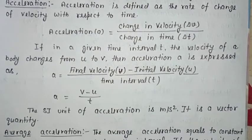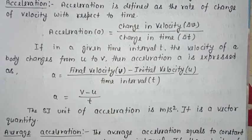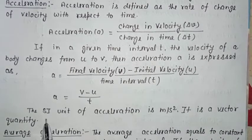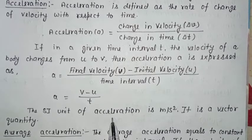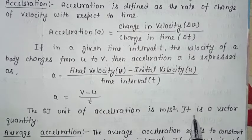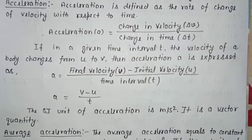It is a vector quantity. The SI unit of acceleration is meter per second square, and it is a vector quantity. Now let's talk about average acceleration.